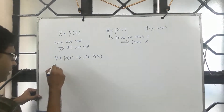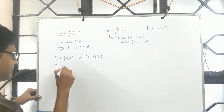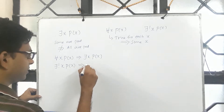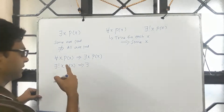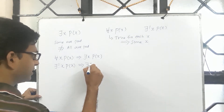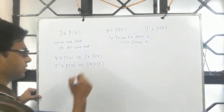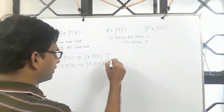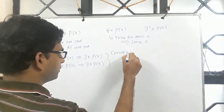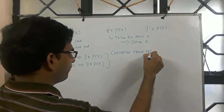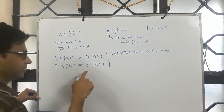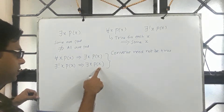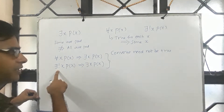Similarly, if you find at least one x such that p of x is true, this implies that there exist exactly one x such that p of x is true, which means there exist at least one x where p of x is true. The converse need not be true — it may be the case that there are two elements that satisfy p of x; that does not imply there exists exactly one x such that p of x.